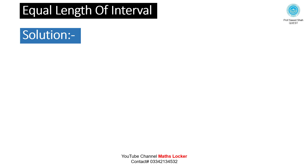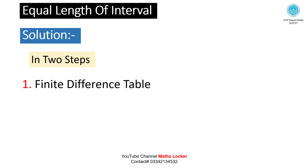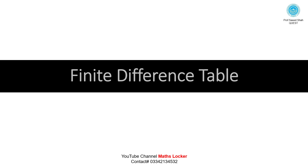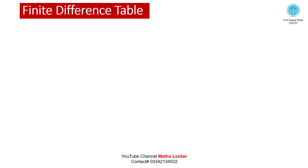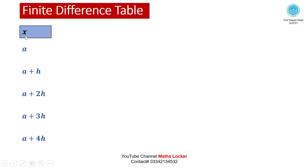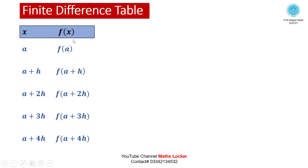For an equal length of interval problem, the solution has two steps. First, construct the finite difference table. We write the values of the independent variable x in the first column, taking 5 points, and the values of f(x) in the second column.